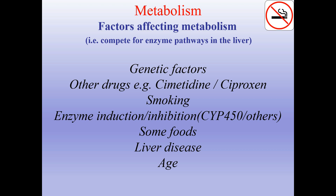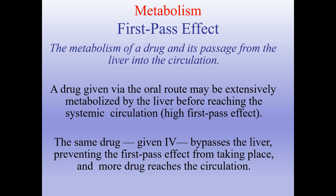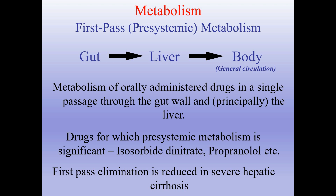First-pass effect is the metabolism of a drug in its passage from the liver into the circulation. A drug given orally may be extensively metabolized by the liver before reaching the systemic circulation — this is a high first-pass effect. The same drug given IV bypasses the liver, preventing the first-pass effect, and more drug reaches the circulation. On this slide you can see metabolism of orally administered drugs in a single passage through the gut wall and the liver. Drugs for which pre-systemic metabolism is significant include isosorbide dinitrate, propranolol, etc. First-pass elimination is reduced in severe hepatic cirrhosis.